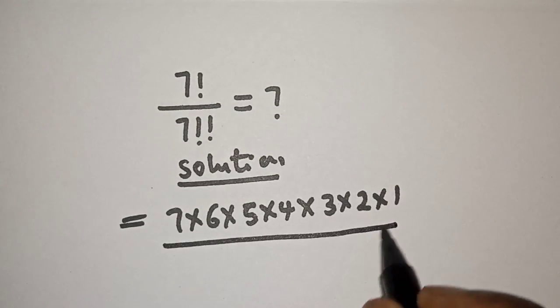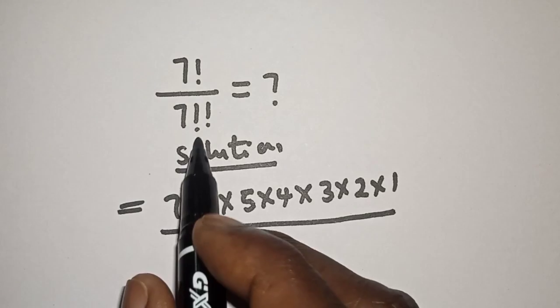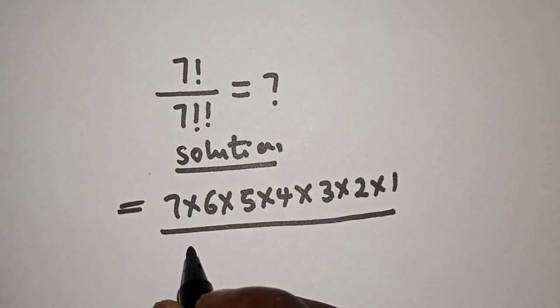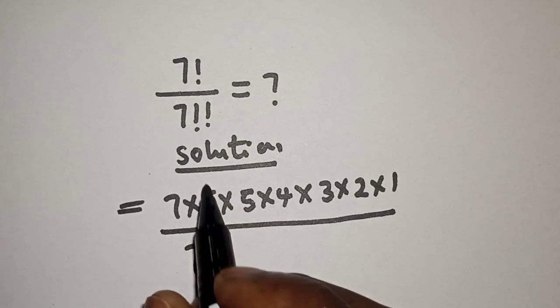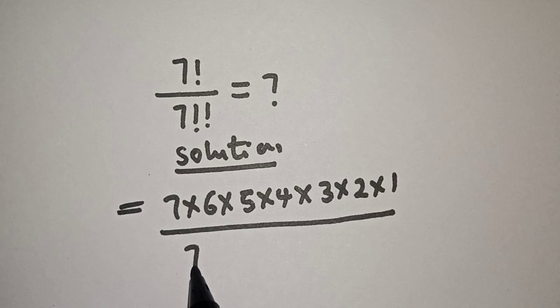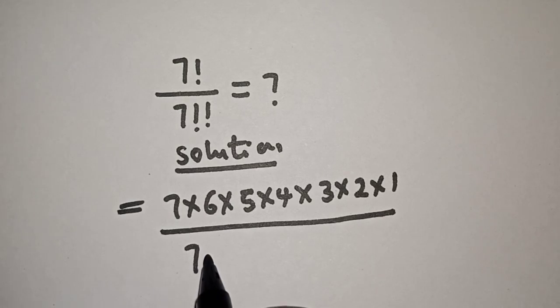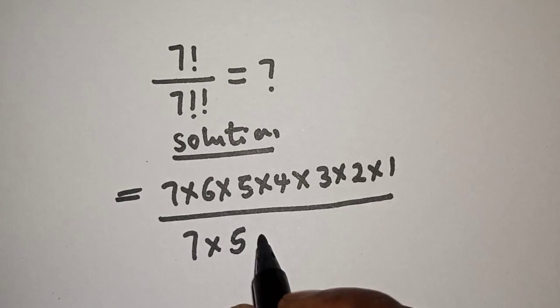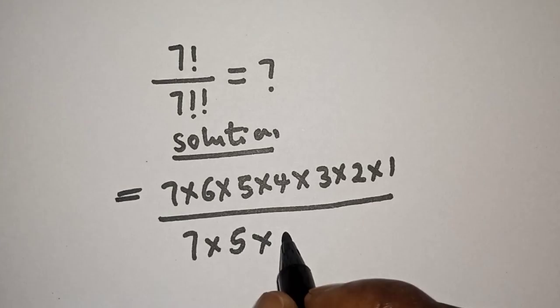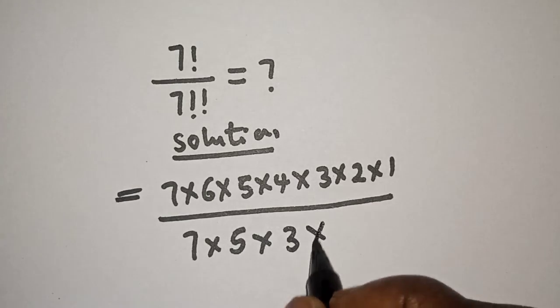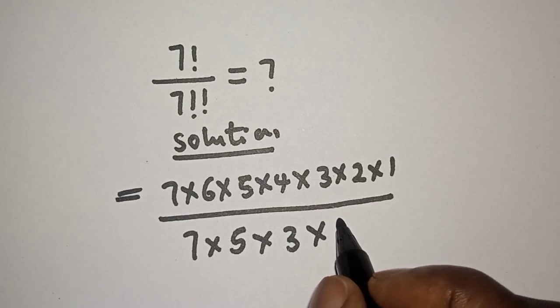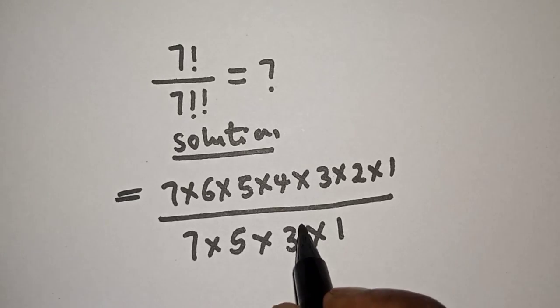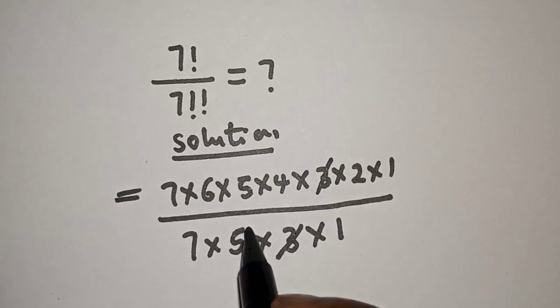Then over 7 double factorial can be written as 7, because it's double factorial, this will be 7 minus 2 times 5, then times 5 minus 2, which is 3, times 3 minus 2, which is 1. So this one will cancel this, this one will cancel this, and this one will cancel this.